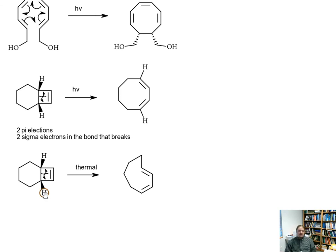So here are just four examples of using the Woodward-Hoffman rules to predict the stereochemical outcome of electrocyclic reactions. Thank you for watching.